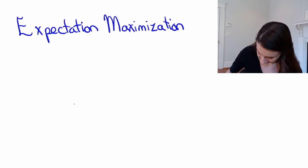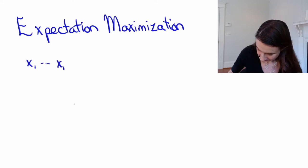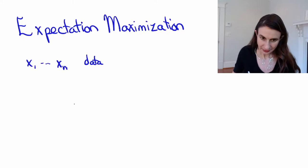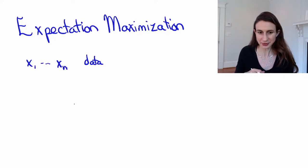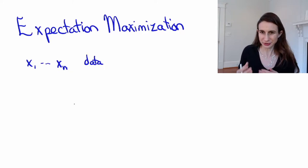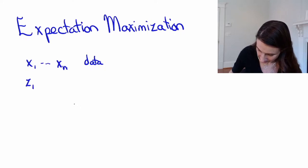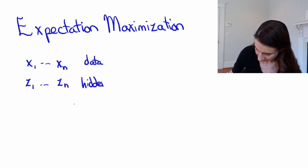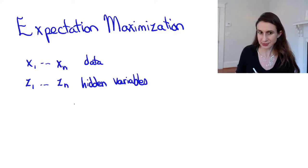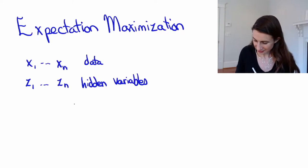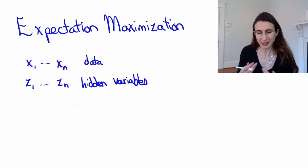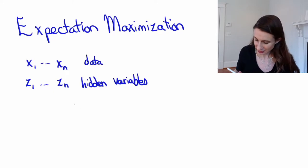So we start with data x1 through xn. And then we have hidden variables — you should think of those as clusters that we don't know which cluster generated which data point. These hidden variables take values between 1 and k. So we have one hidden variable for each data point, and each zn is a value between 1 and k, telling you which cluster the point xi came from.